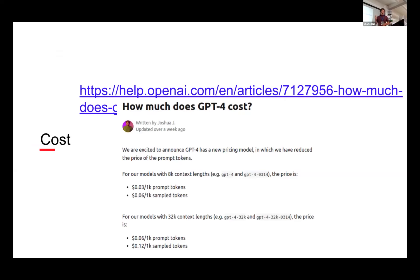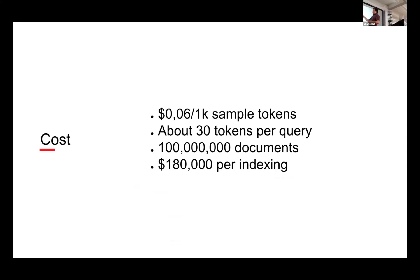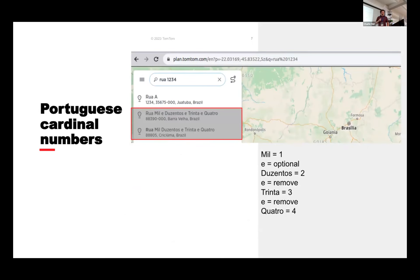But did we actually use GPT-4? Let's look at the cost: three cents or six cents per thousand tokens. I have about 30 tokens in my prompt. With about 100 million documents, my company needs to pay about two hundred thousand dollars just for one indexing. That's crazy. Do we really need LLM? We can just transform 'mil' to one, 'duzentos' to two, 'trinta' to three, 'quattro' to four.